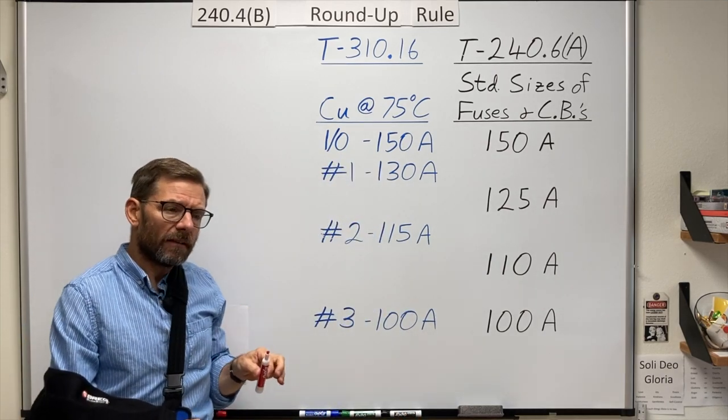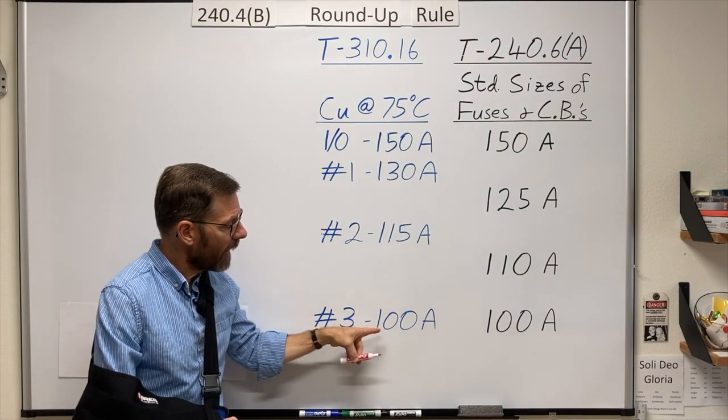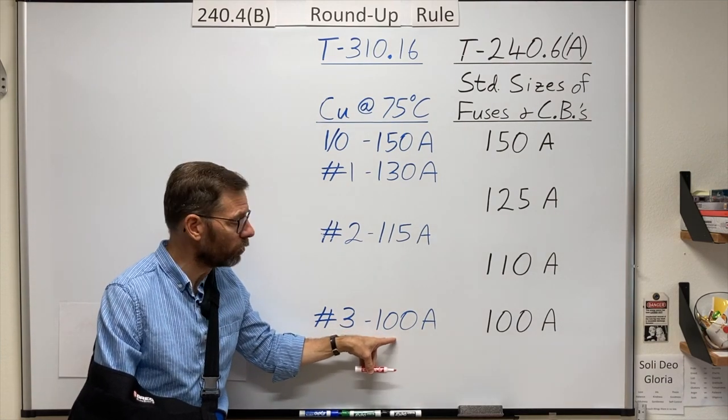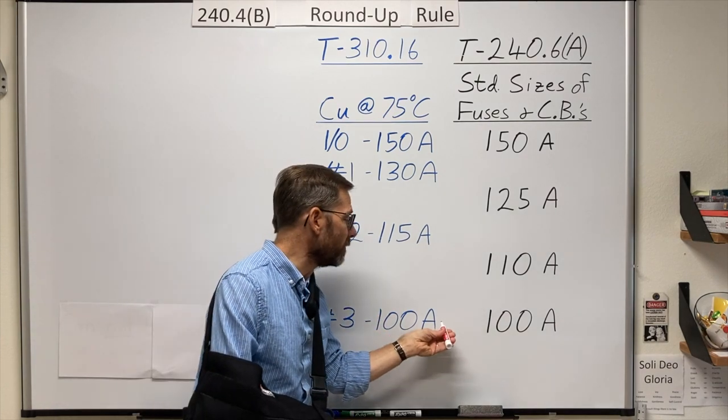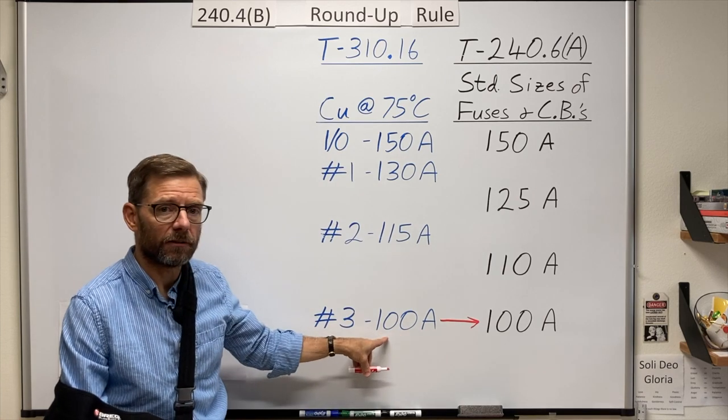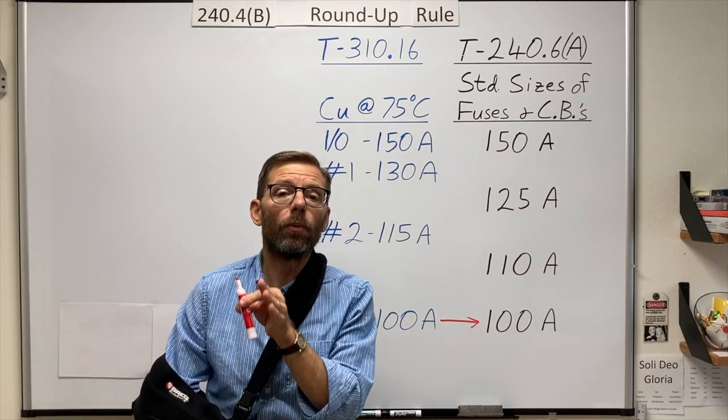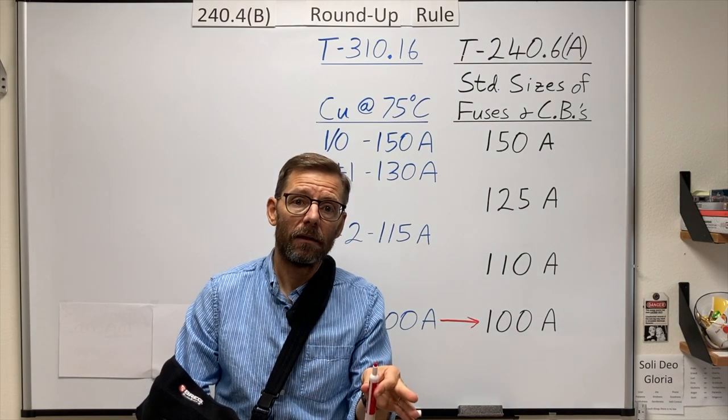Now you might think, and correctly so, that a conductor should have an ampacity that's equal to or greater than the device that is protecting the conductor. And that's a good basic understanding. We want to think that way.